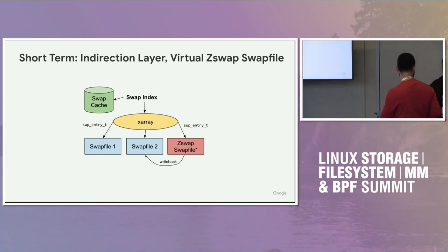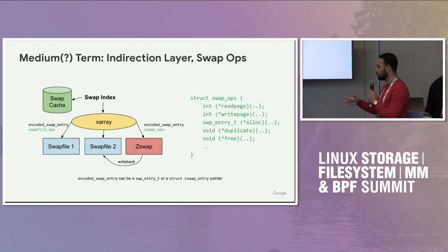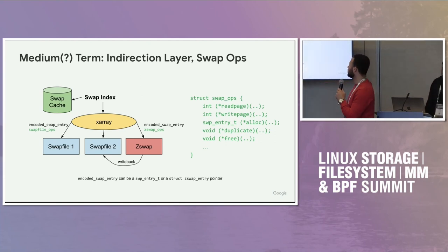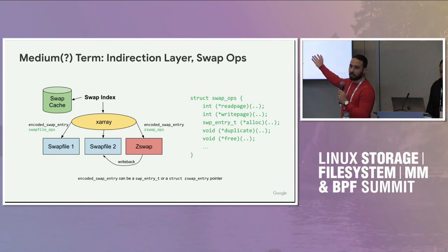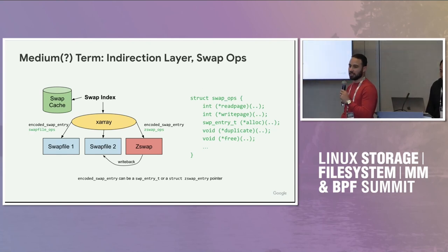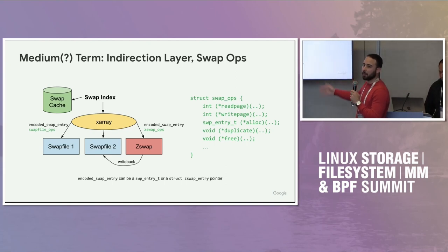I'm not very fond of this. I would like to go to the medium-term solution, which I think might as well do the nicer thing. Fundamentally we have the same structure, but instead of using a hack with a virtual swap file or swap infrastructure for ZSwap, we actually abstract away the swap operations. We have read page, write page, duplicate, free — all the things we do today with swap files, which are already implemented for swap files — but we also implement the missing ones for ZSwap. ZSwap already has the equivalent of read page, write page, alloc. We just need to implement things like swap counting in ZSwap.